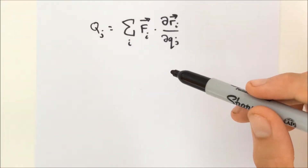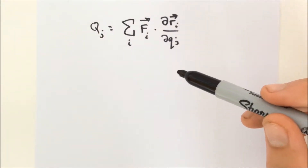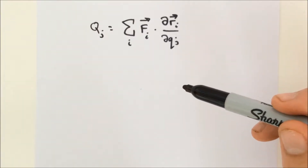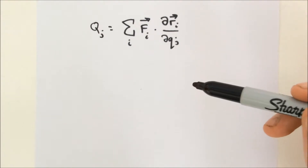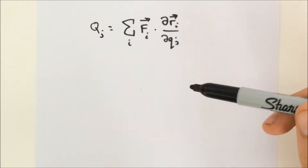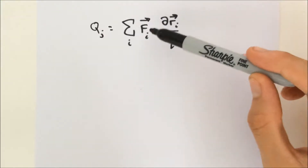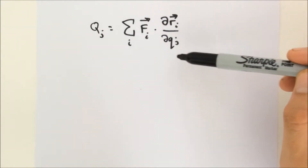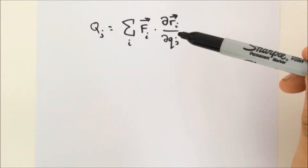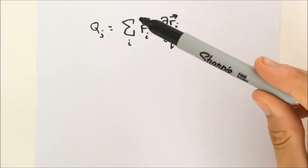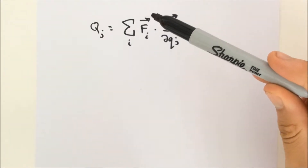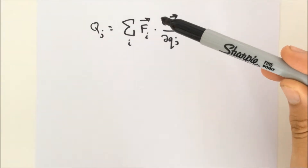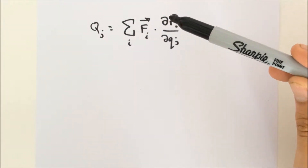For any force that we know in Cartesian coordinates, we can find the generalized force by using the definition of the generalized coordinates in terms of the coordinates in which the force is known. The definition of the generalized force is Q_j equal to the sum over i of F_i dotted with the partial derivative of r with respect to q_j. To find this generalized force, first we have to determine the dissipative force in Cartesian coordinates and the full transformation between the Cartesian and generalized coordinates.